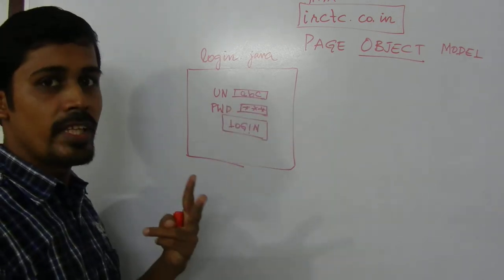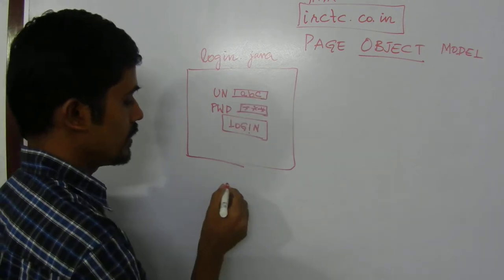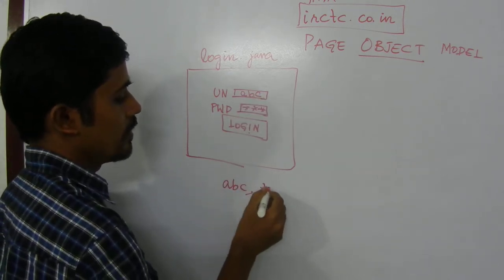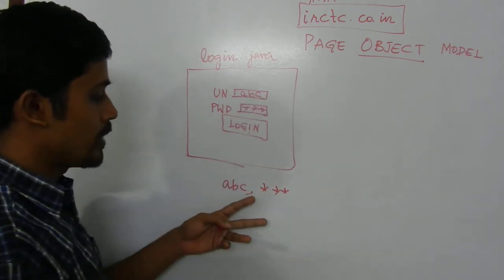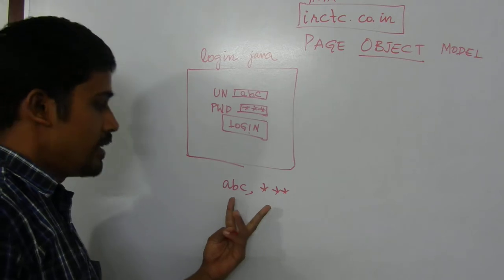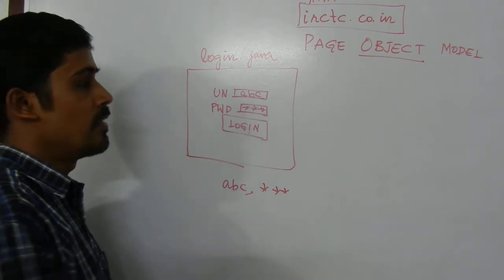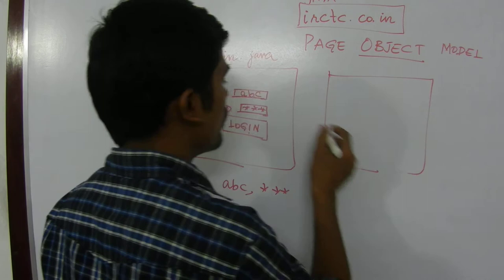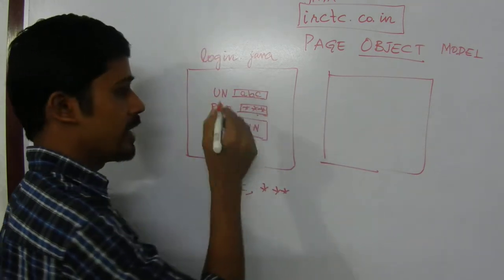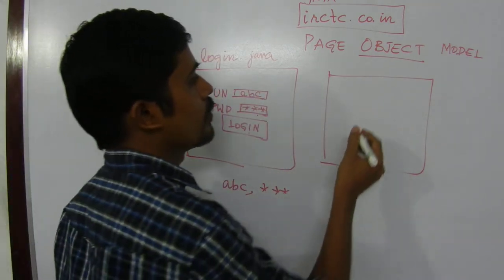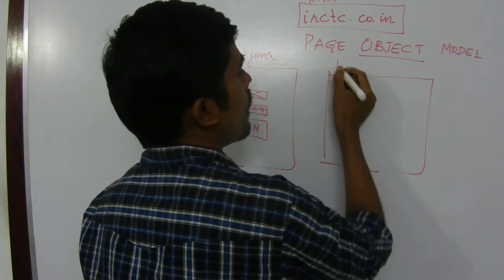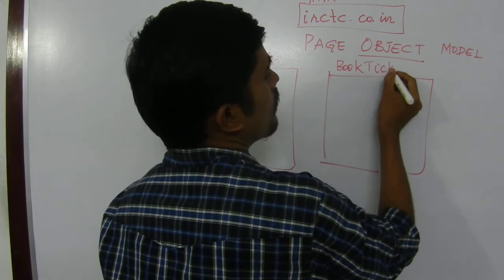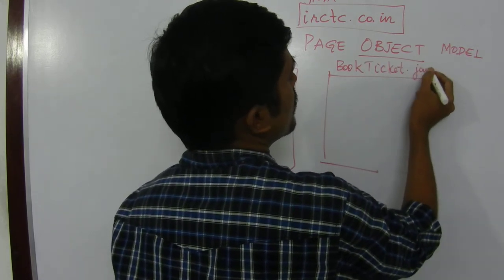Now I am passing two variables here — ABC as the username and the password. These two are the inputs for my next page. If these two inputs are correct, I am going to have my book ticket page, which is book ticket dot java.